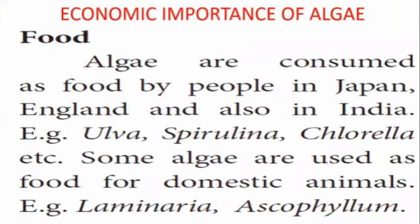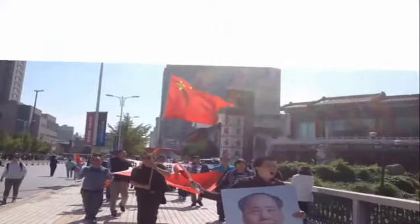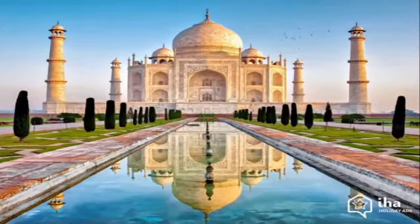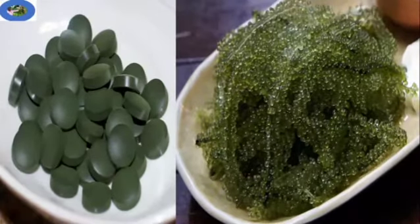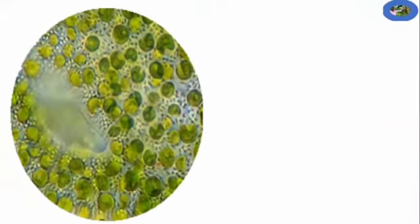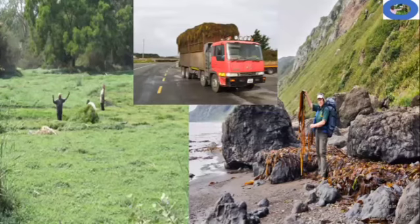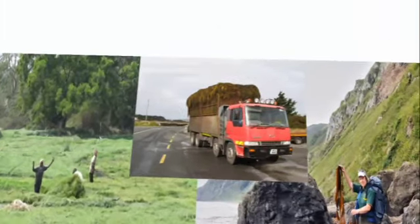The economic importance of algae: algae are consumed as food by people in Japan, England, and India. Edible algae include Ulva, Spirulina, and Chlorella. Some algae are also used as food for domestic animals — for example, Laminaria and Ascophyllum are used as animal feed.